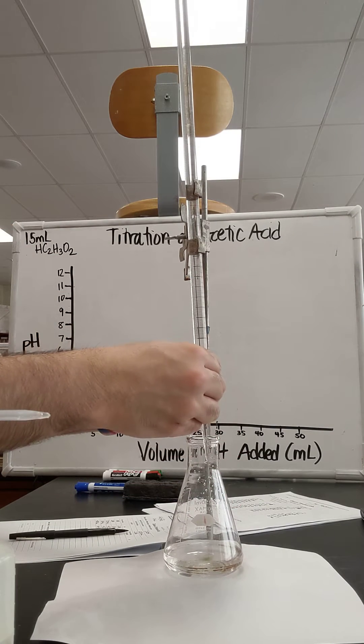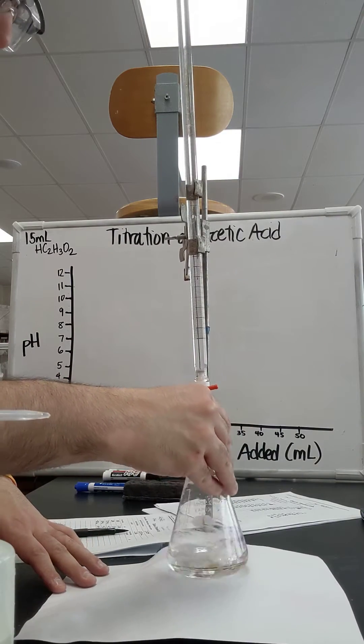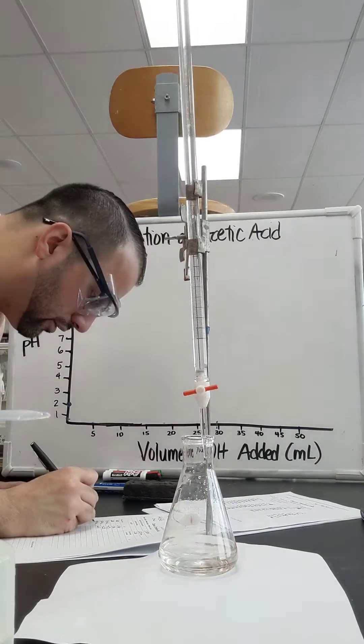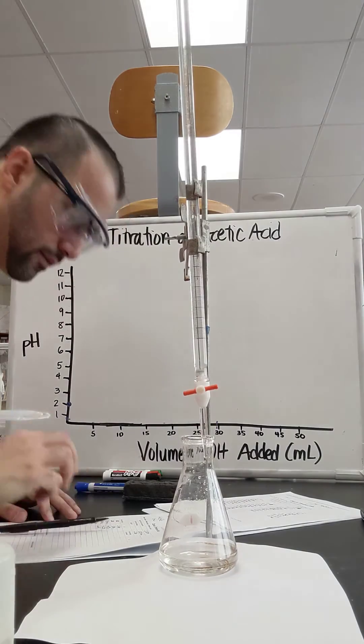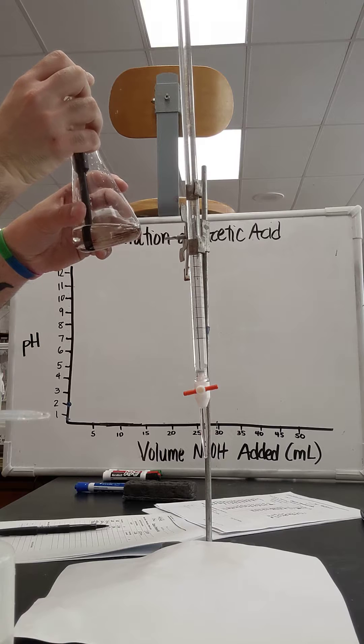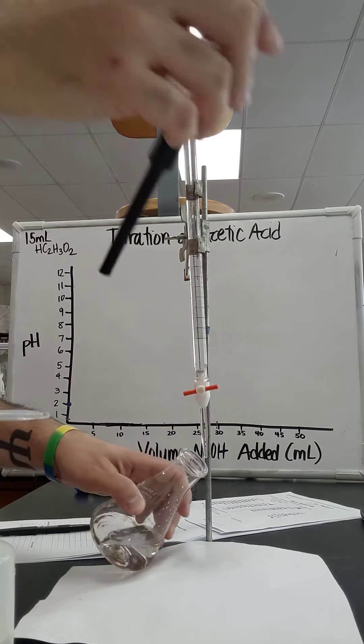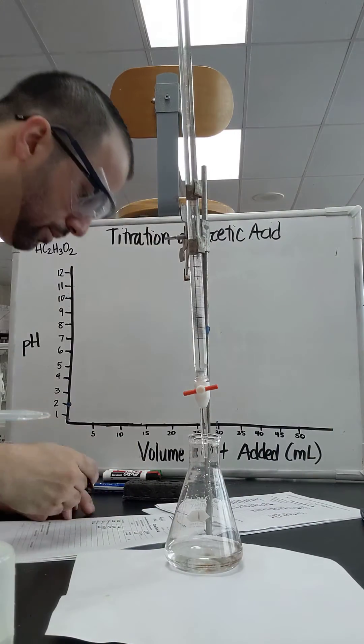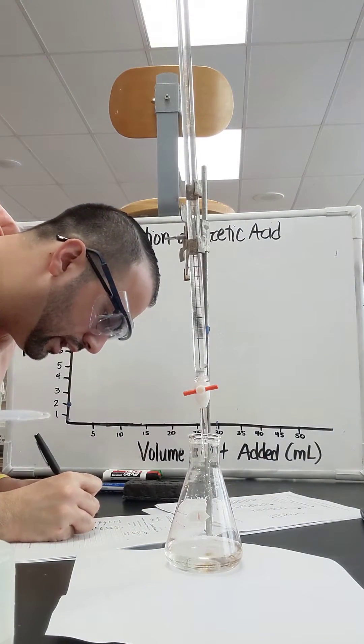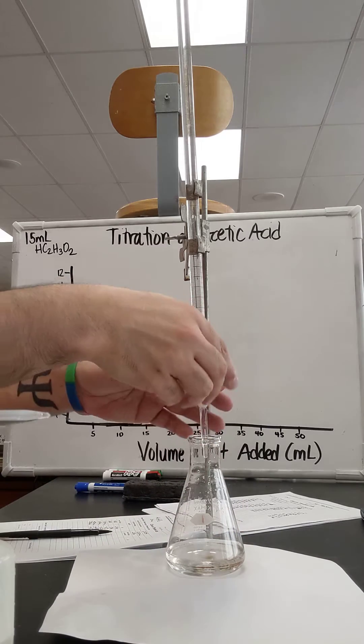I'm going to drop another milliliter. I got to 5 milliliters, got a dark color. And my pH is looking like 4.57. Kind of a steady pH here. We're going to call this the buffer region later. I'm going to drop another milliliter in there. I got 6 milliliters.